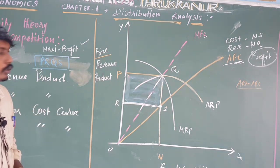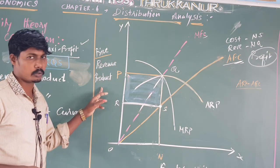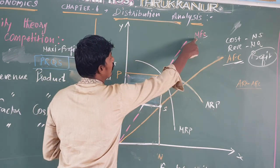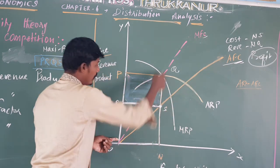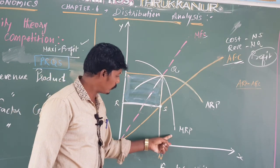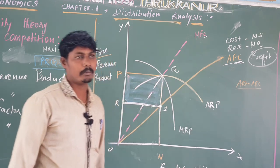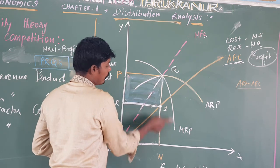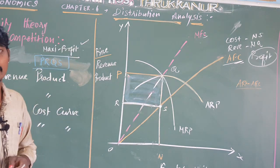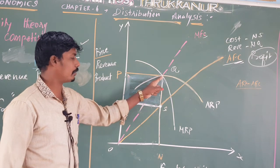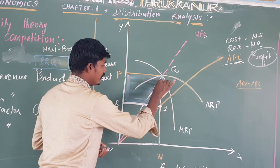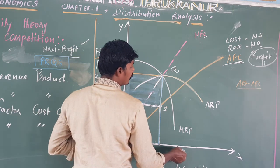To summarize the diagram: the Y-axis shows price, revenue, and product; the X-axis shows factor units. From left to right, we have the Marginal Factor Cost and Average Factor Cost curves. The Marginal Revenue Product and Average Revenue Product are shown as U-shaped curves. Where MRP and MFC intersect, we get the equilibrium point E.